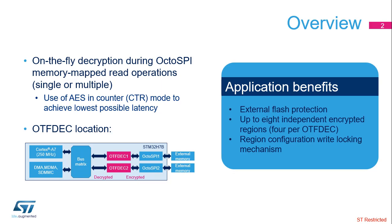Any read access size down to the byte is supported. Two OTF-DEC instances are located between the AXI bus matrix and one OctoSPI peripheral that controls access to an external serial flash. Advanced Encryption Standard, or AES, 128-bit algorithm in counter mode is implemented to achieve the lowest possible latency. As a consequence, each time the content of one encrypted region is changed, the entire region must be re-encrypted with a different cryptographic context — key or initialization vector. Up to eight independent encrypted regions, four per OTF-DEC, can be defined, each with their own 128-bit key and initialization vector information, 64-bit application NONCE, and 16-bit encrypted library version.